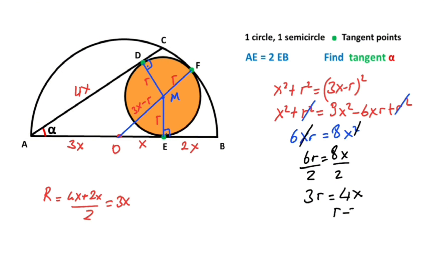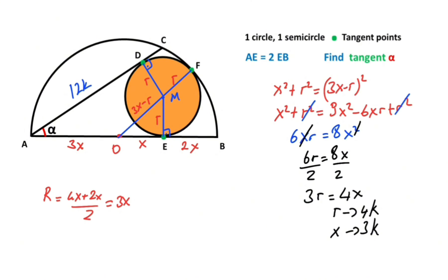So if r equals 4K, then x must equal 3K. Therefore 4x equals 12K, and r equals 4K.